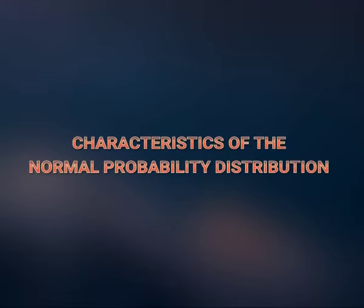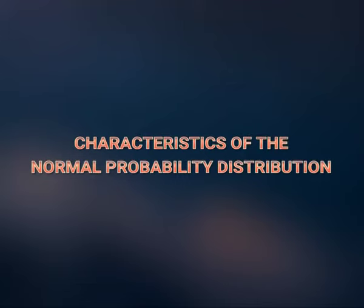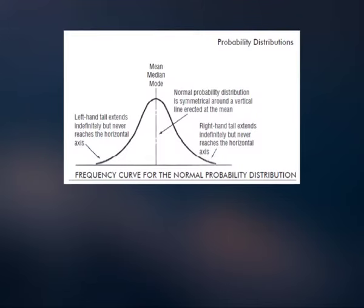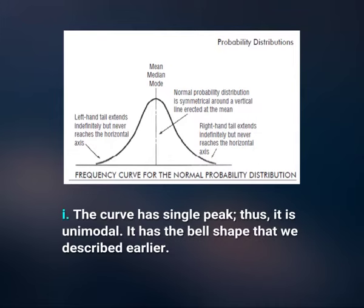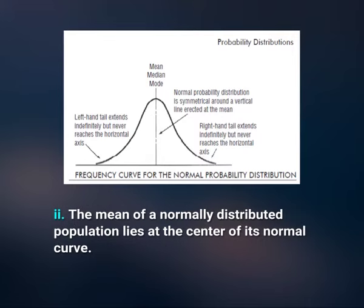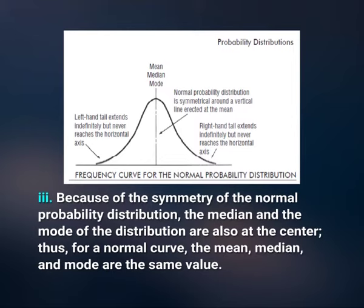Characteristics of the normal probability distribution. Look for a moment at the figure on the screen. This diagram suggests several important features. Number 1: the curve has a single peak, thus it is unimodal — it has the bell shape described earlier. Number 2: the mean of a normally distributed population lies at the center of its normal curve. Number 3: because of the symmetry of the normal probability distribution, the median and the mode of the distribution are also at the center. Thus for a normal curve, the mean, median, and mode are the same value.